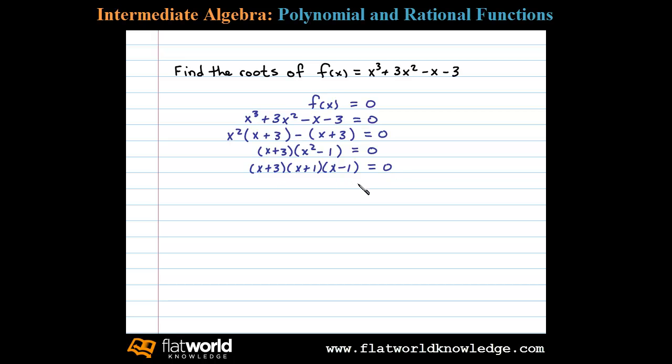Once we have it factored equal to 0, we set each variable factor equal to 0. So either x + 3 = 0 or x + 1 = 0 or x - 1 = 0.